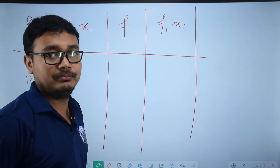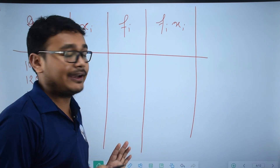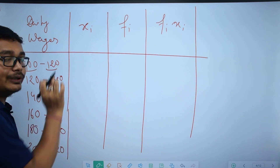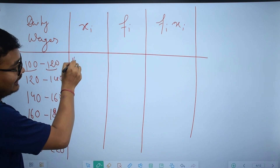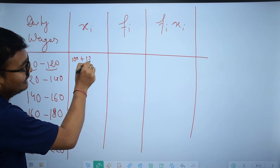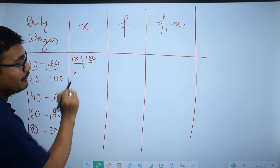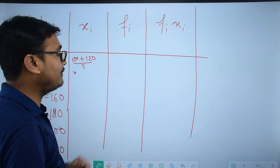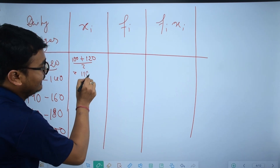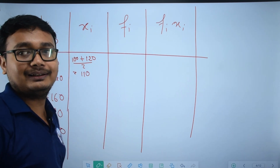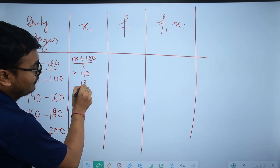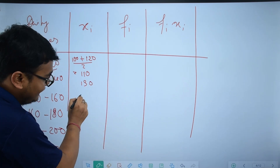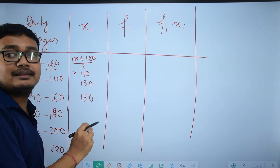Now finding xi values — the midpoints. For 100–120: (100+120)/2 = 110. Next: 130, then 150, then 170, and so on for the remaining intervals.